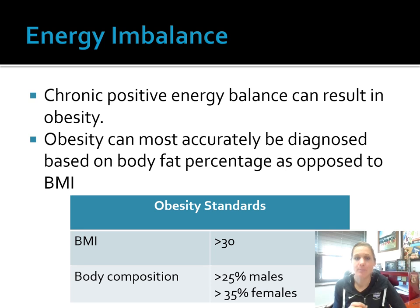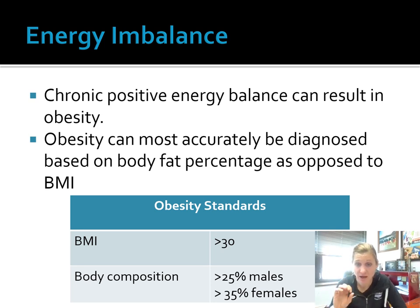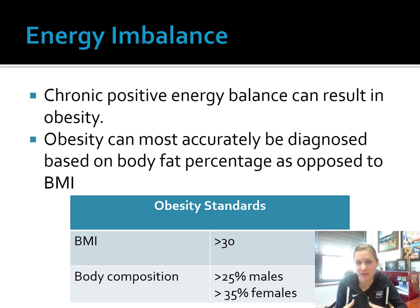Obesity is most accurately diagnosed based on body fat percentage as opposed to BMI, but here you can see both standards: BMI greater than 30, and body fat percentage of 25% for males and 35% for females — though some research will show 32% for females. ACSM says 32% for females. Keep those in mind when we think about the results of this and why we see this issue in our country.